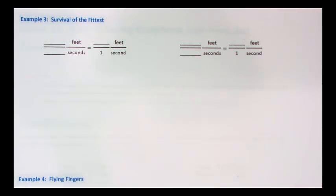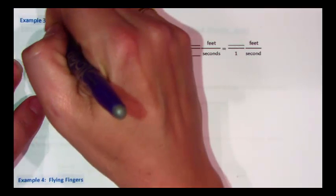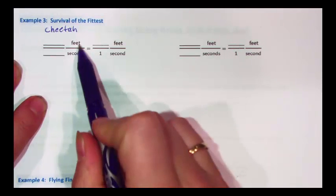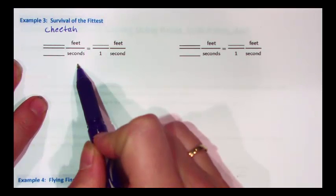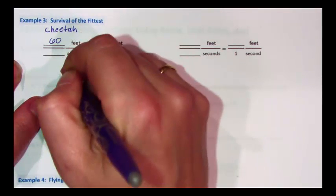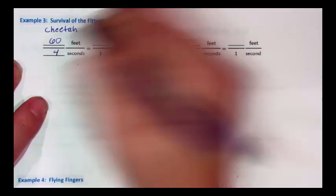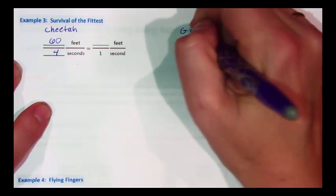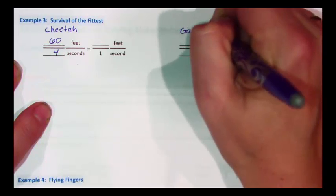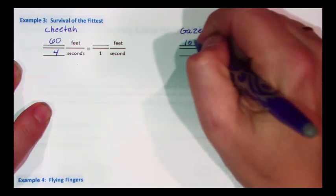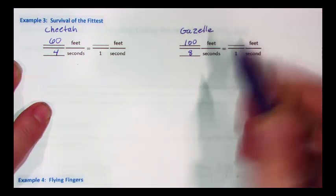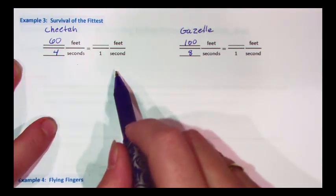In this third example, we're going to see who runs faster. A cheetah that can run 60 feet in four seconds, or the gazelle that he's chasing that can run 100 feet in eight seconds. If we put the cheetah here, we're doing feet per seconds, and the cheetah can run 60 feet in four seconds. And the gazelle that can run 100 feet in eight seconds, we need to find our unit rate to see who is faster.